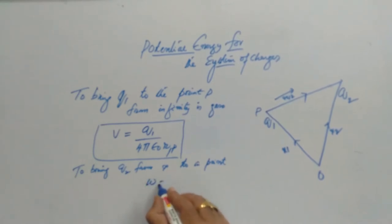W is equal to Q times the potential. What is the potential already existing there? This. This potential is due to Q1, so Q2 times Q1 by 4π epsilon naught.